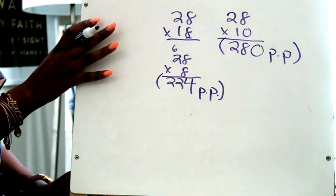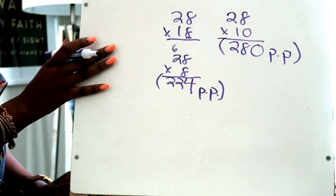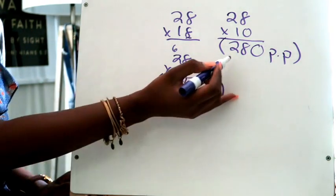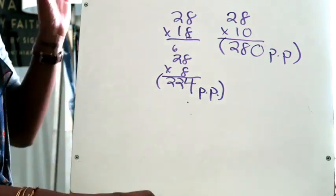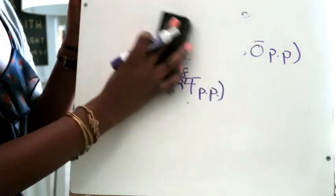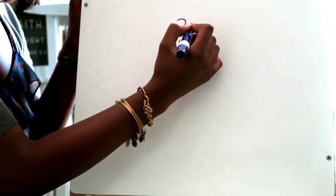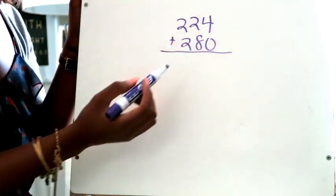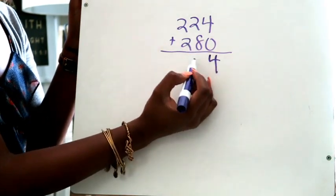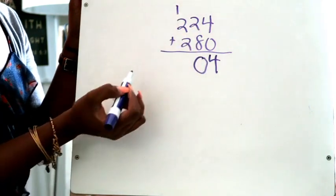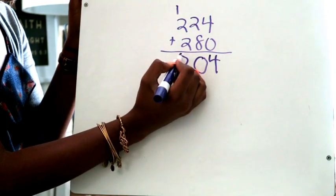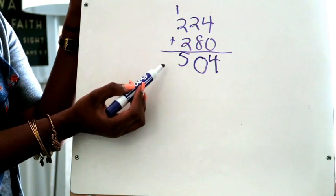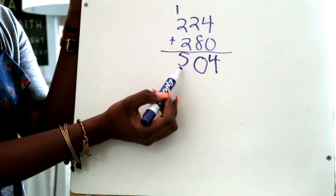Those are the first two things you want to do. I've now solved two parts or I've come up with two partial products to 28 times 18. The next step is you're going to add your two partial products together. So I'm going to take 224 and I'm going to add that to 280. 4 plus 0 is 4, 2 plus 8 is 10, 2 plus 2 is 4 plus 1 is 5. So I am now saying that my answer to 28 times 18 is 504.